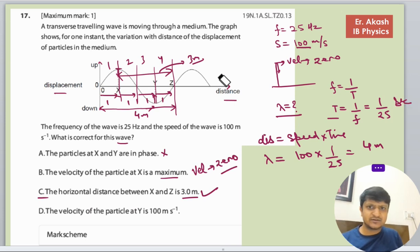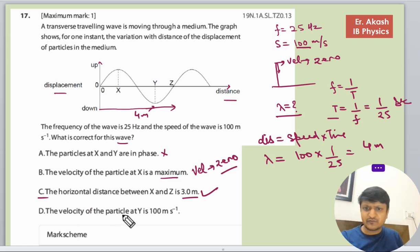Option D: The velocity of particle at Y is 100 m/s. We will now just remove all this so that we can look what is the next point. The velocity of the particle at Y is 100 at Y.